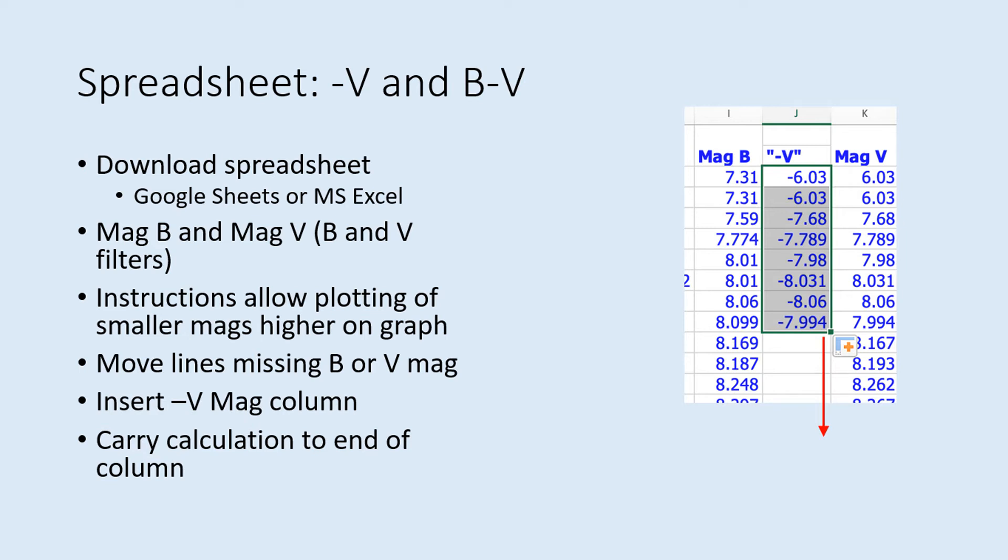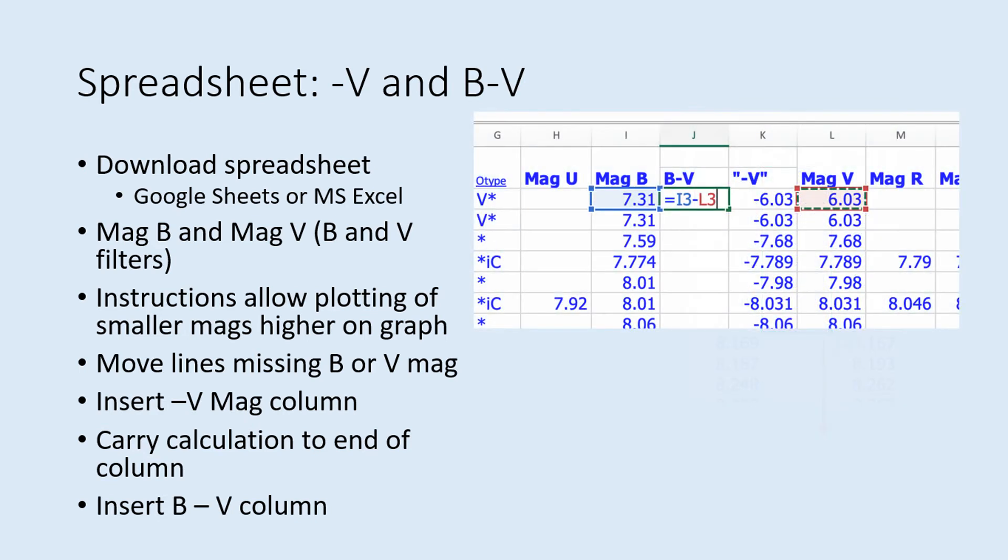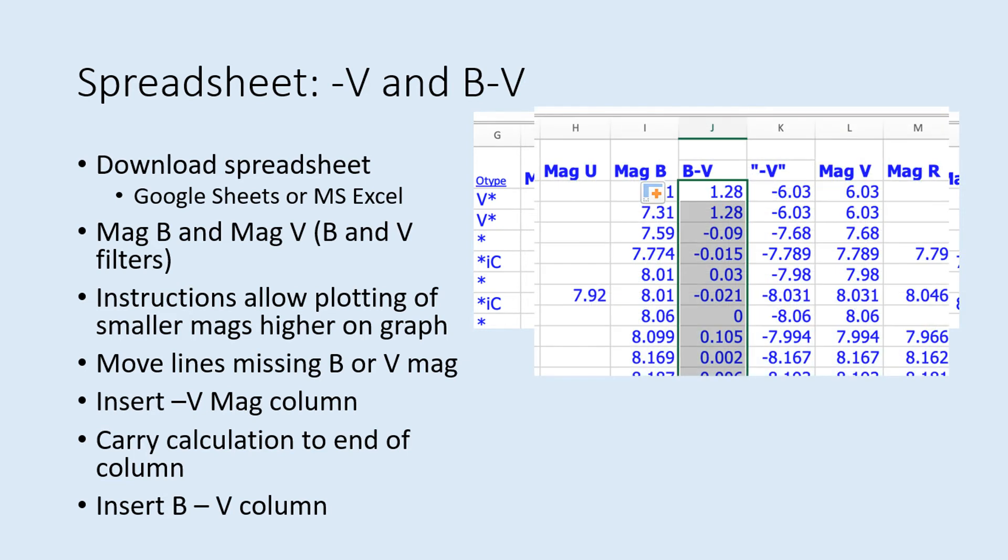Next, insert a new column before minus V and call that B minus V. Then calculate it in a similar way to the previous one. Use the equal sign, then type in the cell reference for the first B magnitude, then a minus sign, and finally the cell reference for the first V magnitude. Once you've defined that formula, you can carry it down the rows just like the minus V magnitudes.